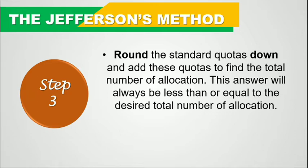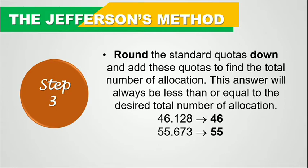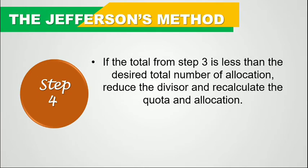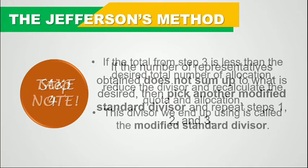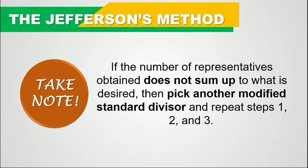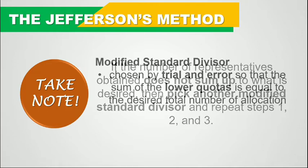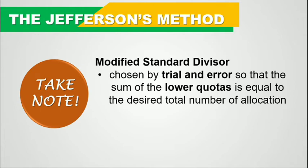When we round down numbers, for example, 46.128 becomes 46 and 55.673 becomes 55. We simply consider the whole part and disregard the fractional part. Step 4: if the total from step 3 is less than the desired total number of allocation, then we will reduce the divisor and recalculate the quota and allocation. This divisor we end up using is called the modified standard divisor. If the number of representatives obtained does not sum up to what is desired, we will pick another modified standard divisor and repeat steps 1, 2, and 3. The modified standard divisor is chosen by trial and error so that the sum of the lower quotas equals the desired total number of allocation. This modified standard divisor is lesser than the standard divisor and is not necessarily a whole number.